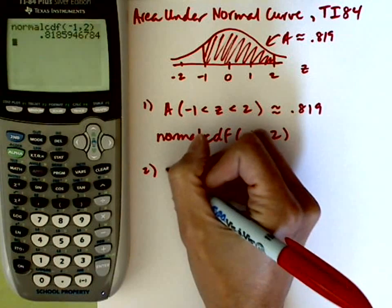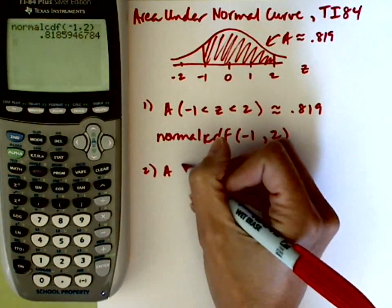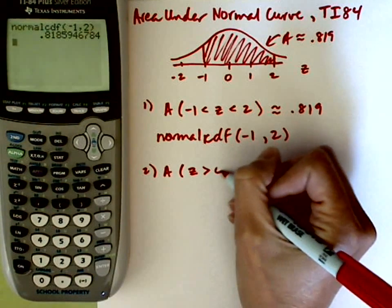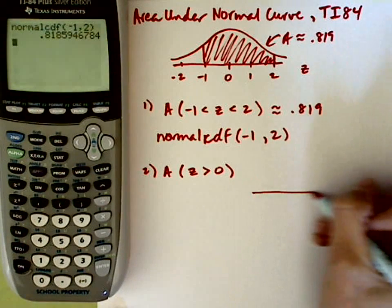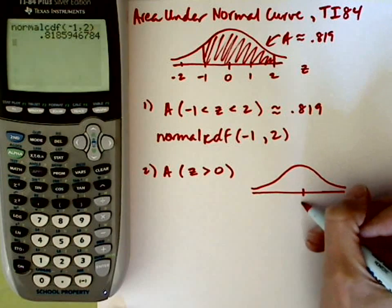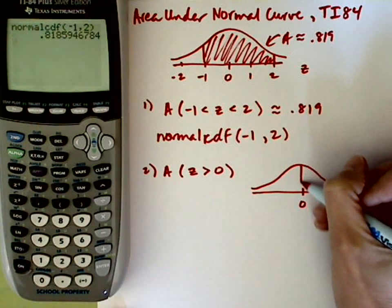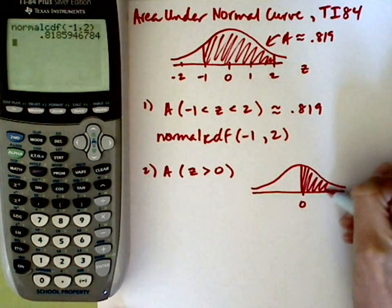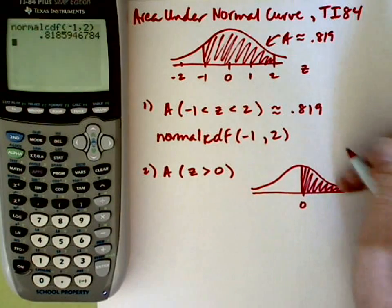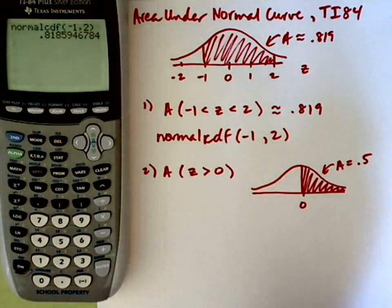Number 2, let's look at the area from 0 all the way over to the right. So we want the area under the normal curve where the z-score is greater than 0. If I sketch a normal curve, just to give you an idea of what area we're looking for, here's the z-score of 0. We want all of the z-scores greater than that, so we're looking for the area to the right of 0. Remember the entire area is equal to 1, so we're expecting an area here equal to half of that, which would be 0.5.